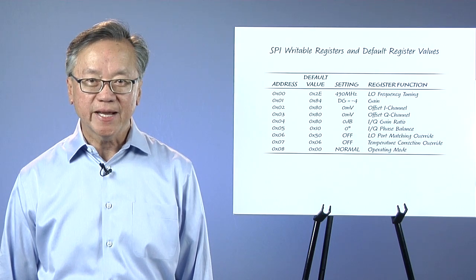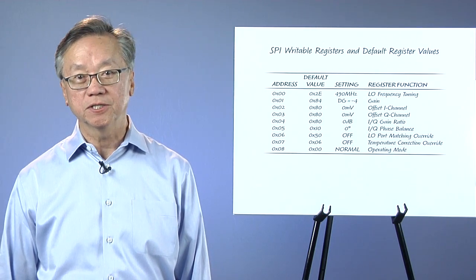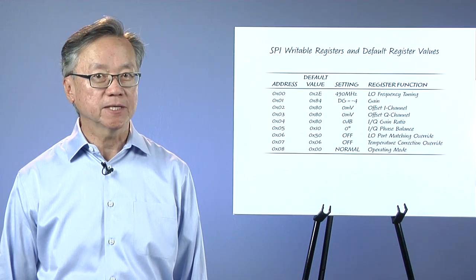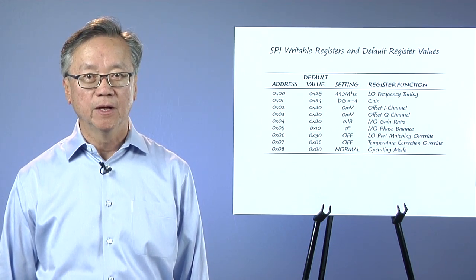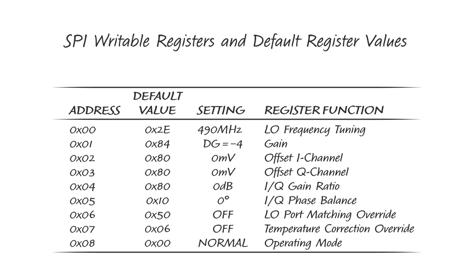For the more demanding applications, the device has a set of registers that are accessed by an SPI serial bus. Through the SPI bus, you can select specific registers that tune the LO frequency, change the gain, tune the I and Q channel DC offsets that optimize carrier suppression, tune the I and Q gain and phase balance that optimize sideband suppression, and finally, provide temperature correction and operating mode functions.